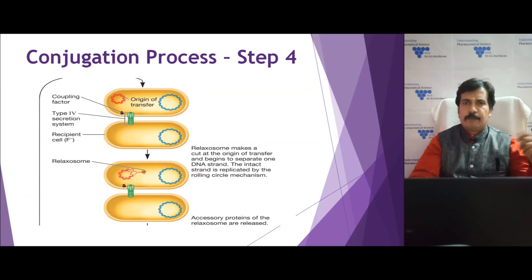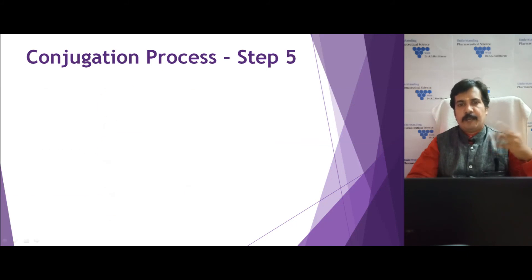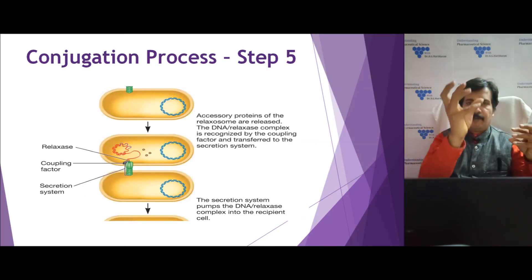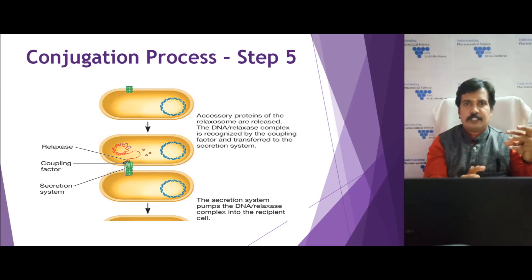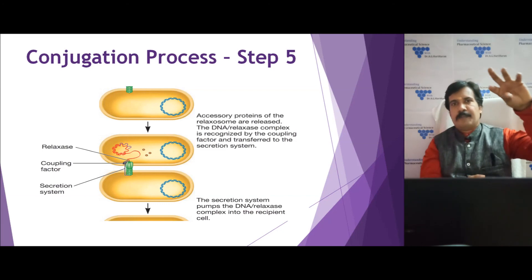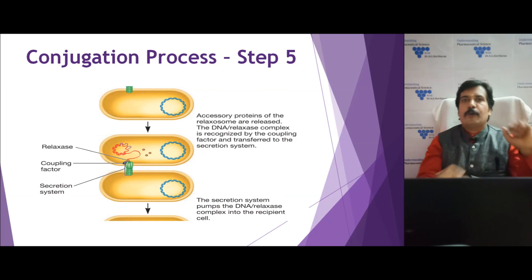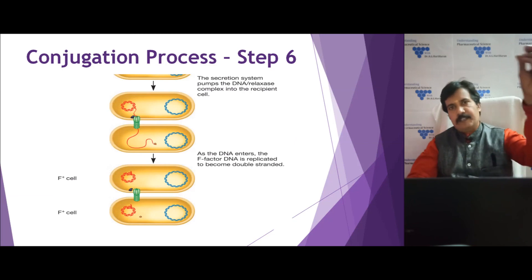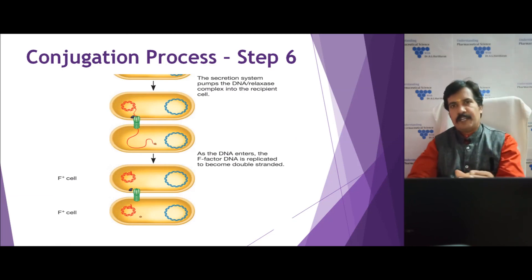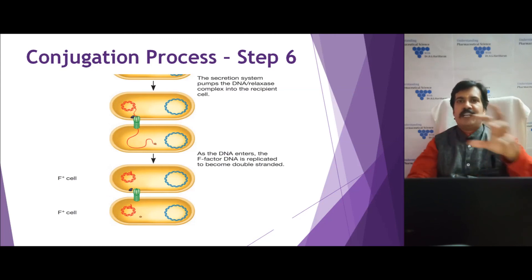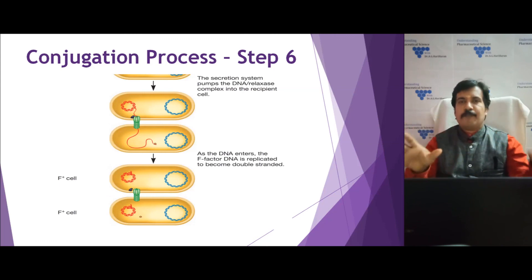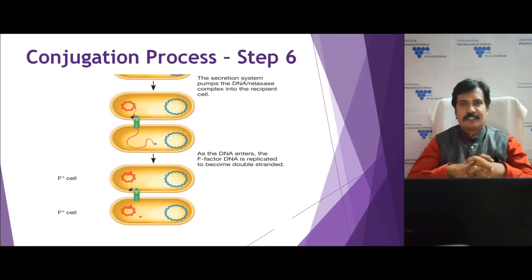After nicking, the strand starts moving through the Type IV secretion system channel and enters the F minus strain. This transfer is facilitated by the coupling factor. With the help of the coupling factor, one strand moves into the F minus strain, while the remaining strand in the F plus strain synthesizes its complementary strand by a rolling circle mechanism. The single strand that enters the F minus strain also circularly replicates to produce its complementary strand. Finally, the pilus detaches and the F minus strain is converted into an F plus strain.